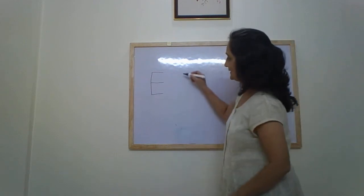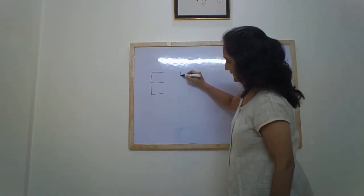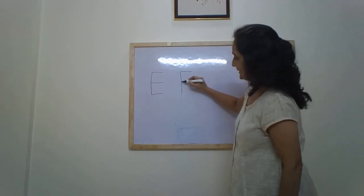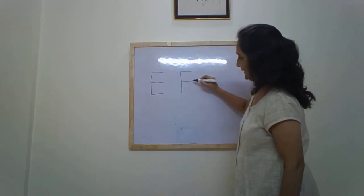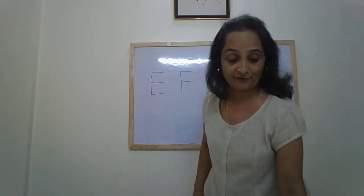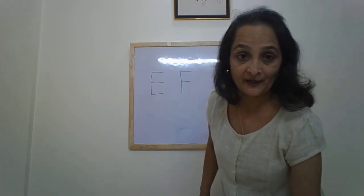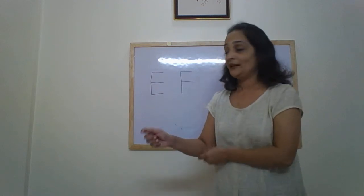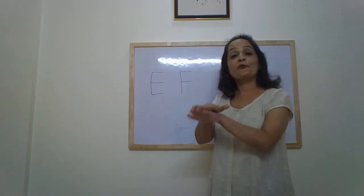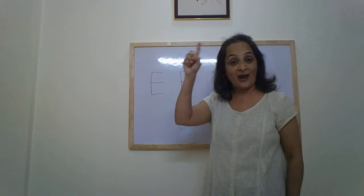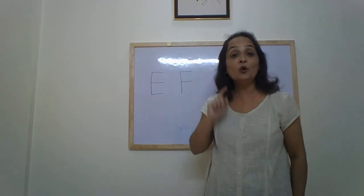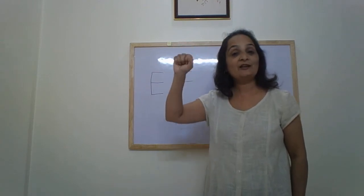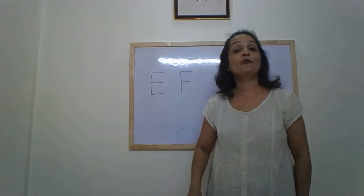Next letter is F. Standing line, sleeping line on top, sleeping line in the middle — is letter F. F makes the sound F. F for fish, fan, food, fingers, fist, fork, and ferry.